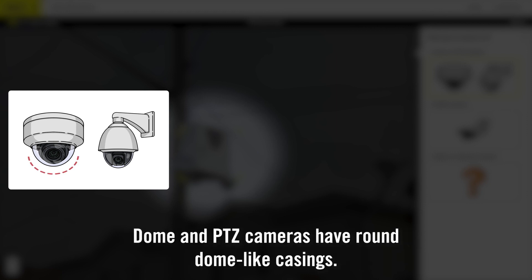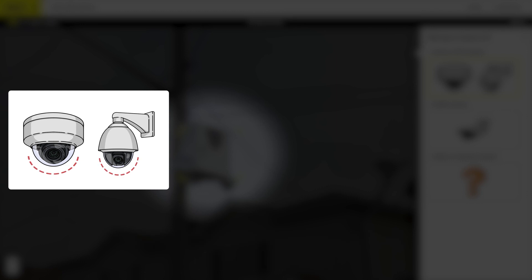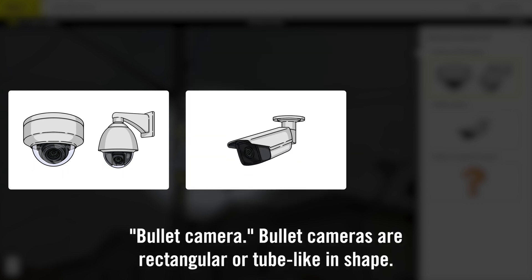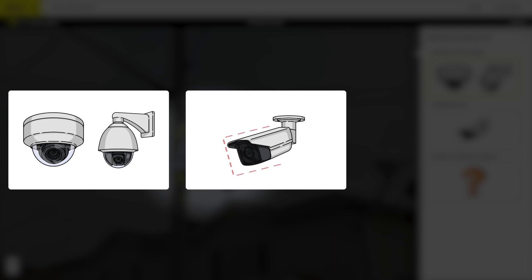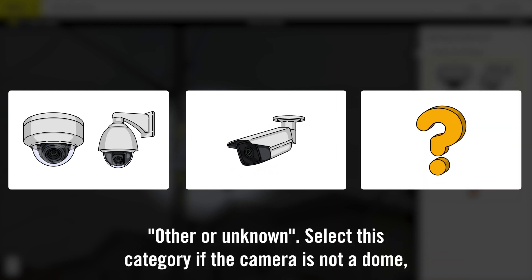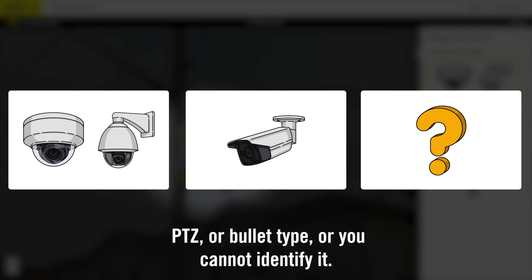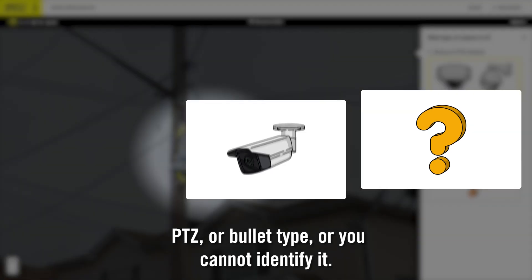Dome and PTZ cameras have round dome-like casings. Bullet cameras are rectangular or tube-like in shape. Select 'other or unknown' if the camera is not a dome, PTZ or bullet type, or if you cannot identify it.